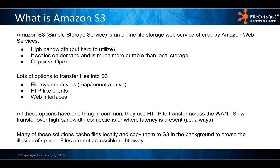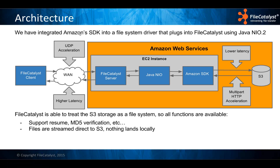What S3 did to improve the situation with HTTP is to allow multi-part uploads and multi-part downloads. What we've then done is taken that and integrated it into a file system driver within FileCatalyst. The key here is that the actual transfers we're doing with the Amazon SDK using multi-part HTTP uploads are all within the Amazon infrastructure. Everything outside the Amazon infrastructure is using UDP acceleration. You're using UDP acceleration on the higher-latency WAN area, and then where S3 and EC2 are close together with lower latency, multi-part HTTP acceleration gets you pretty good performance.